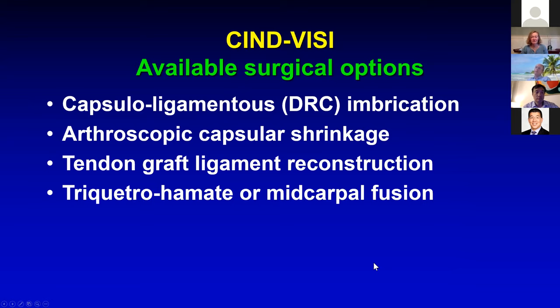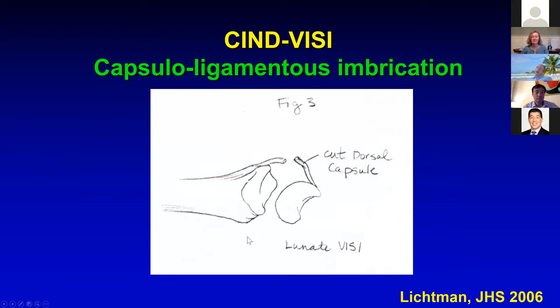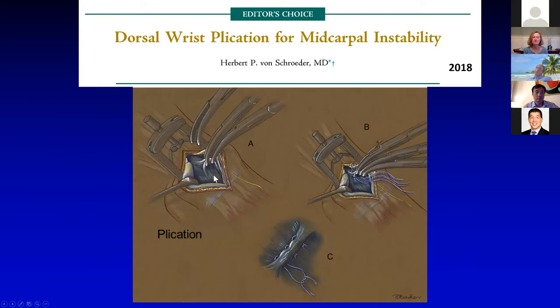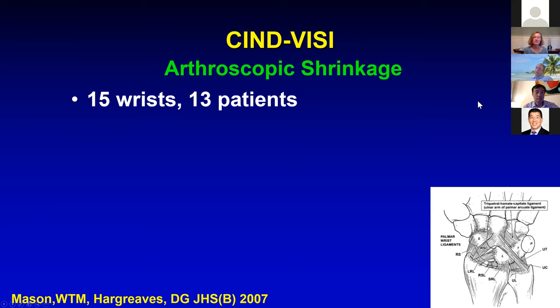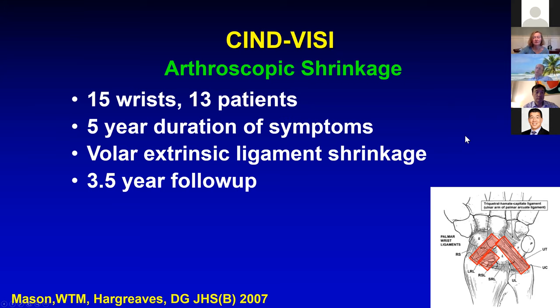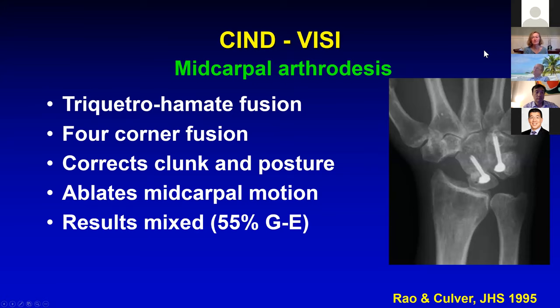David Lichtman described cutting the redundant dorsal radiocarpal ligament and imbricating it together in a pants-over-vest reconstruction. Herbert von Schroeder makes a small incision, opens up the dorsal capsule ligament off the dorsal radiocarpal ligament, and imbricates it with sutures — very effective, as shown in 27 patients. Arthroscopic capsular shrinkage, as Jeff just talked about, in 15 wrists of 13 patients at three and a half years of follow-up showed improved function, symptoms, and DASH scores. Lots of different ways to treat this if you have to. Avoid fusing the midcarpal joint.